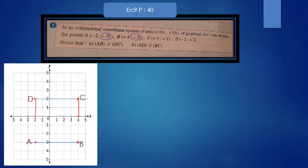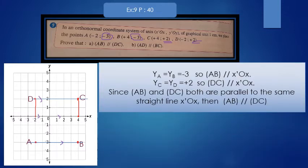Also, C and D have the same ordinate, which is plus 2. So, CD is parallel to x-axis. We know that if two lines are parallel, any line parallel to one of them is parallel to the other.